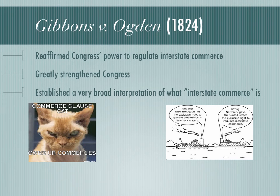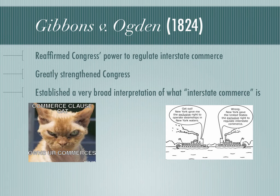Lastly, we have Gibbons v. Ogden, a case involving the Commerce Clause. It affirmed that Congress has the power to regulate interstate commerce — that's nothing new. However, their interpretation of what interstate commerce is was very, very broad. We have continued for the last nearly 190 years to have a very broad interpretation of what interstate commerce is. So if it has anything to do with commerce and crosses state lines, anything about your business, then Congress is allowed to make a law about it.